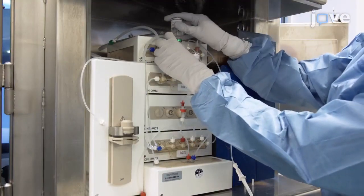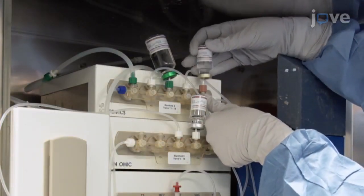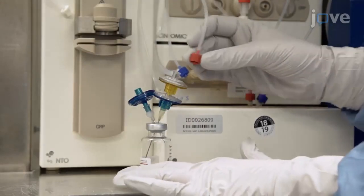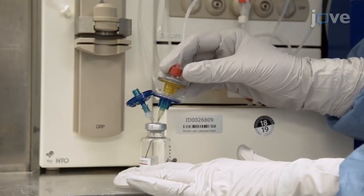Attach the solutions provided in the gallium-68 labeling kit to the manifolds and attach the sterile vial with the non-vented filter to the output of the labeling module.